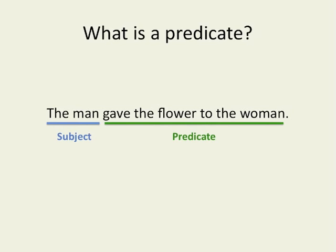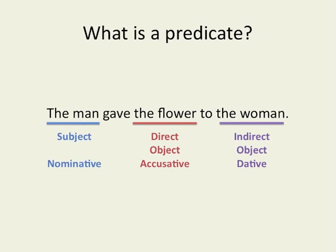A predicate nominative is a noun in the predicate. However, you already know other cases that function in the predicate. For example, if we said the same sentence in Latin, we would use the accusative case for the flower because it is the direct object. The woman would be in the dative case because it is the indirect object. So when would we ever see a predicate nominative in Latin?